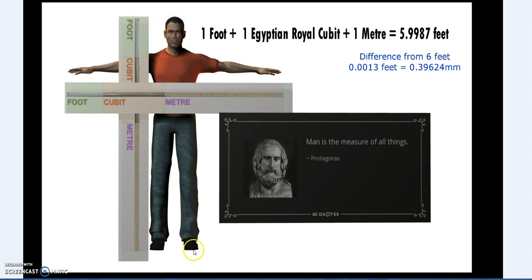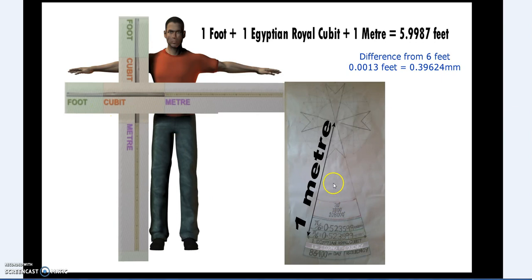He pointed out the relationship between one foot plus one Egyptian royal cubit plus one meter being essentially six feet—almost ten hairs difference. In an ideal world, a person is as tall as they are from fingertip to fingertip—foot, cubit, and meter.